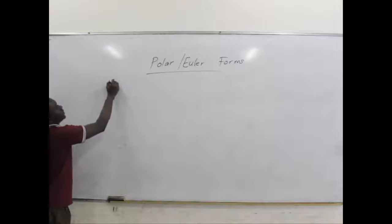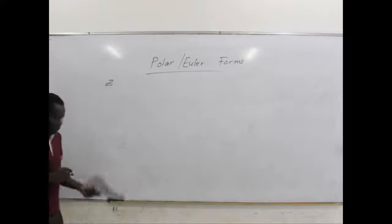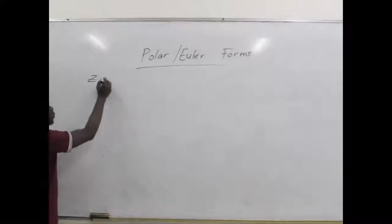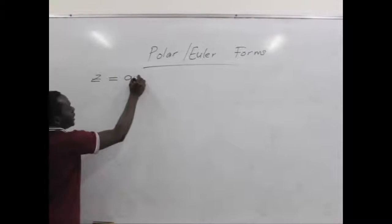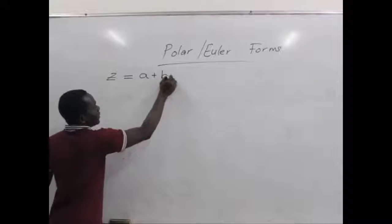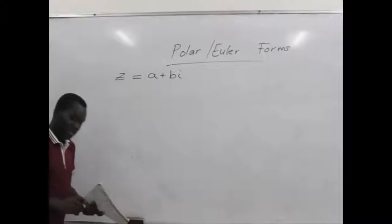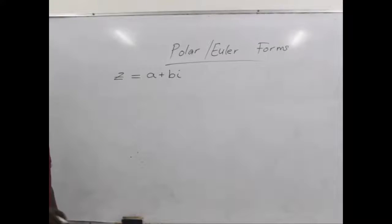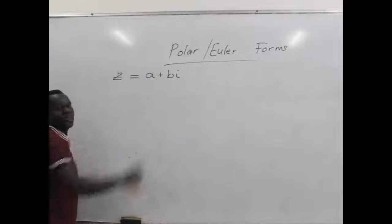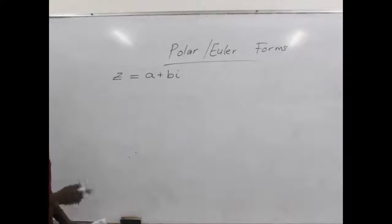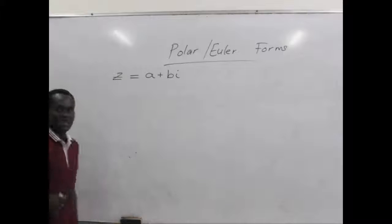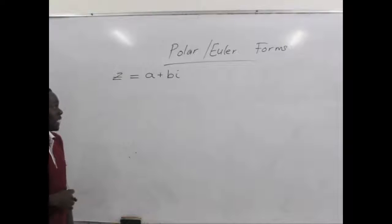So today we are taking polar and Euler forms of complex numbers. Now let's assume Z is a complex number with its components A plus Bi. We can draw this on the complex plane. Let's draw this on the complex plane and do a little bit of analysis here.